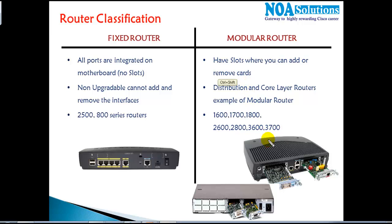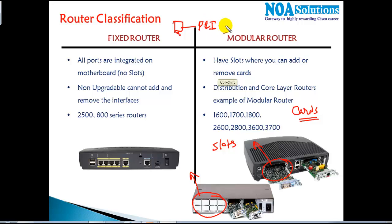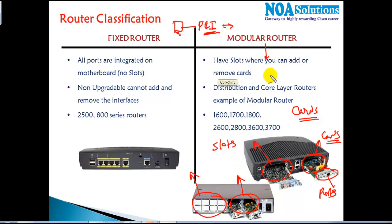In the case of modular routers, we have slots available — you can see this is one slot, and on this slot we can place cards. It's like a computer where you have PCIe slots where you can add a graphics card, a LAN card, or a modem card. You purchase cards and add them to free slots. In each card you have some extra ports which you can connect to the router. This type of router is called a modular router.